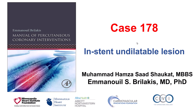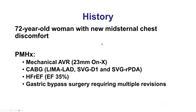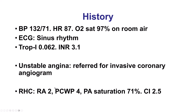This is a case illustrating some of the difficulties treating undilatable lesions that are within a previously placed stent. The patient was a woman who presented with chest discomfort. She had a previous mechanical AVR, previous bypass with three grafts, and a reduced ejection fraction of 35%, as well as gastric bypass surgery.